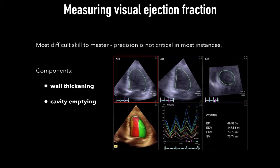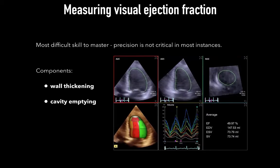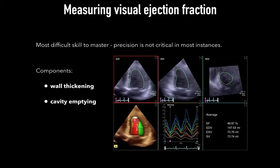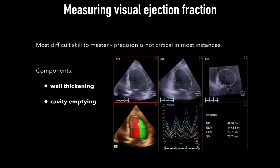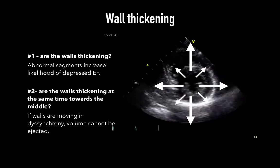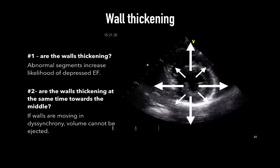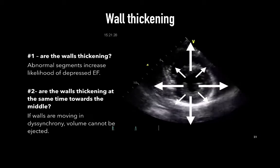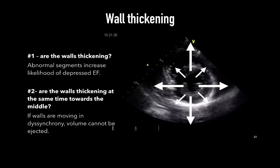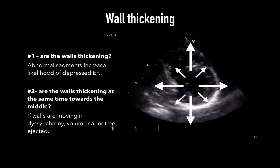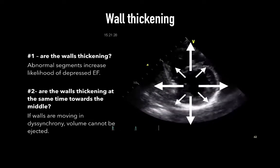For our purposes, a precise estimate is not critical. Visual estimation relies on two major components: wall thickening and cavity emptying. The first question is always: are the walls thickening? If some part of the walls are not contracting, this means dysfunction and denotes the possibility of a decreased EF. This is even more clear if all walls are not thickening.